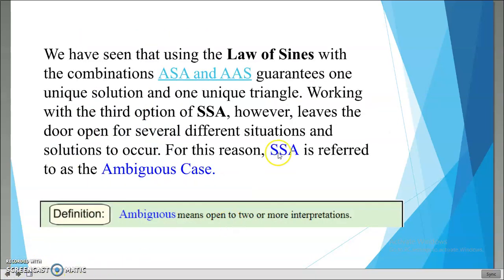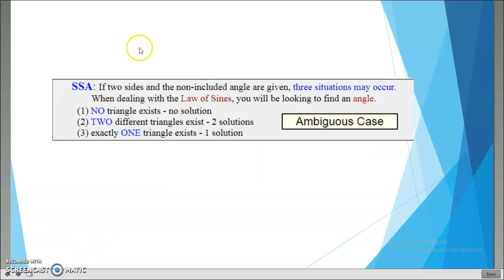We have seen that using the law of sines with the combination of ASA and AAS guarantees one unique solution and one unique triangle. Working with the third option of SSA, however, leaves the door open for several different situations and solutions to occur. For this reason, SSA is referred to as the ambiguous case. Ambiguous means open to two or more interpretations.